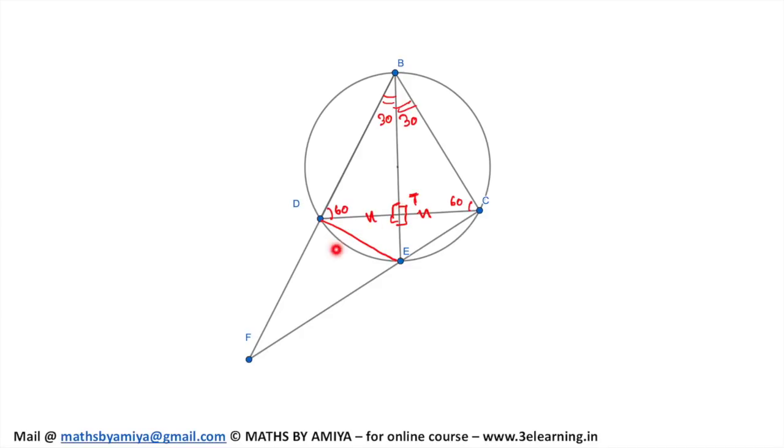T is the point of intersection. If you look carefully at triangles DTE and TEC, both triangles are congruent. How? By SAS - this side equals this side, T is the common side, and the angle in between is 90 degrees. So they are congruent.